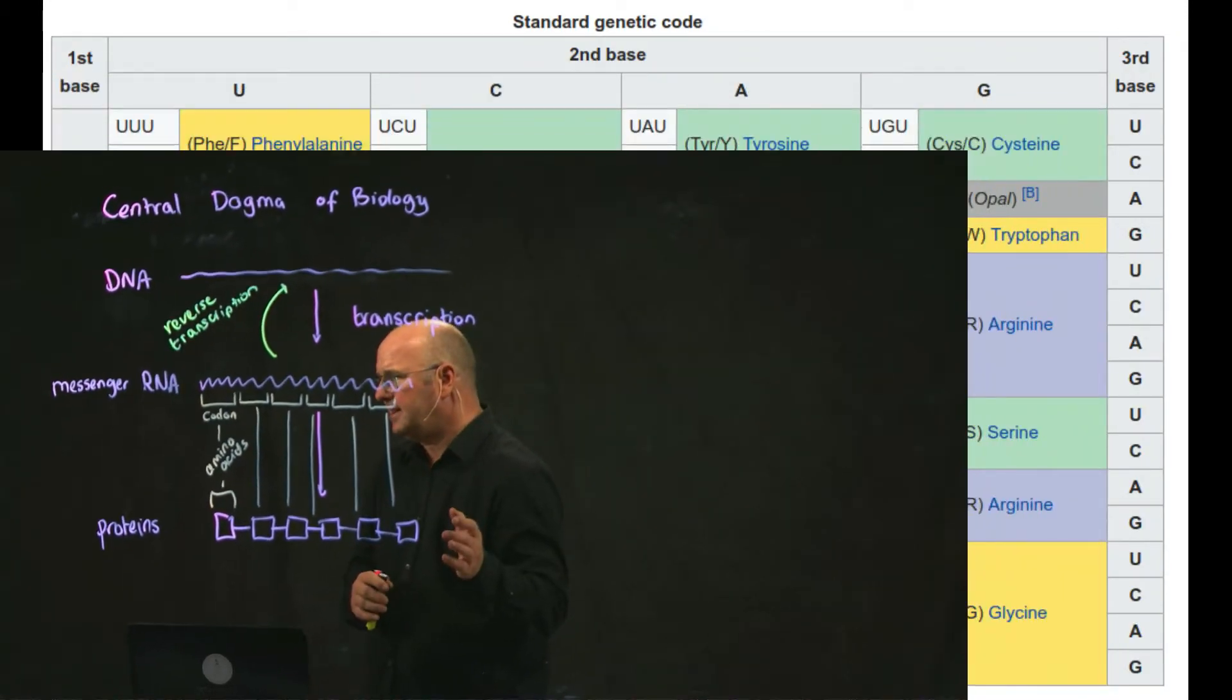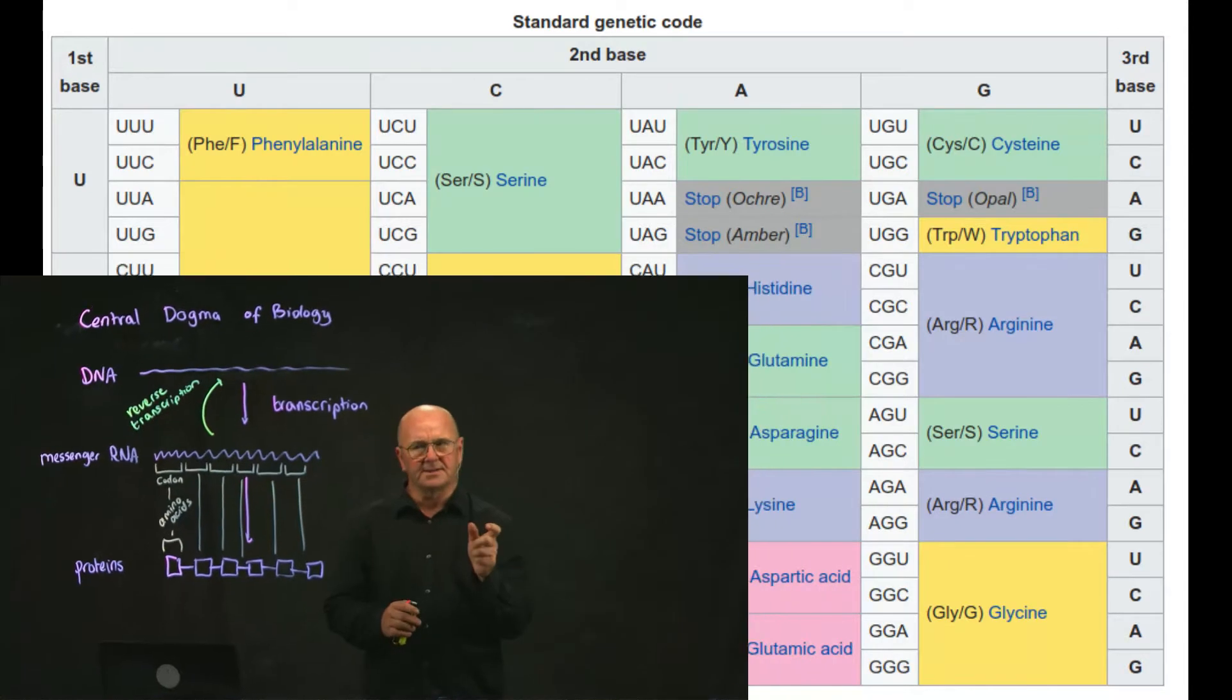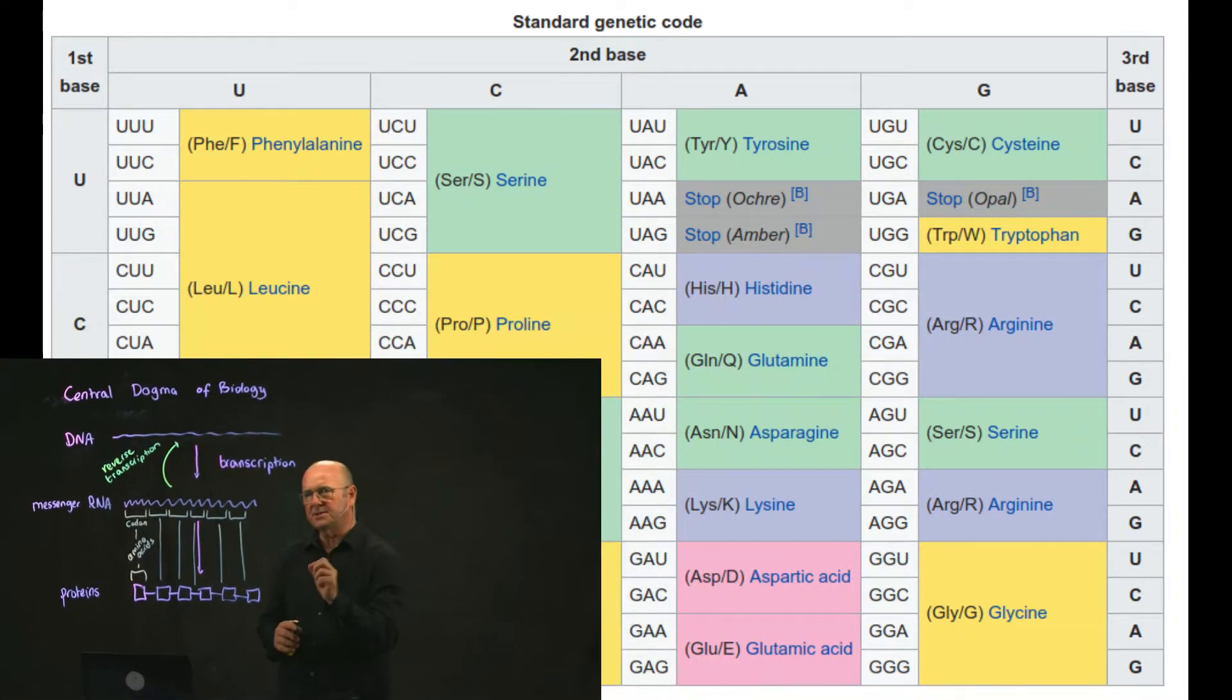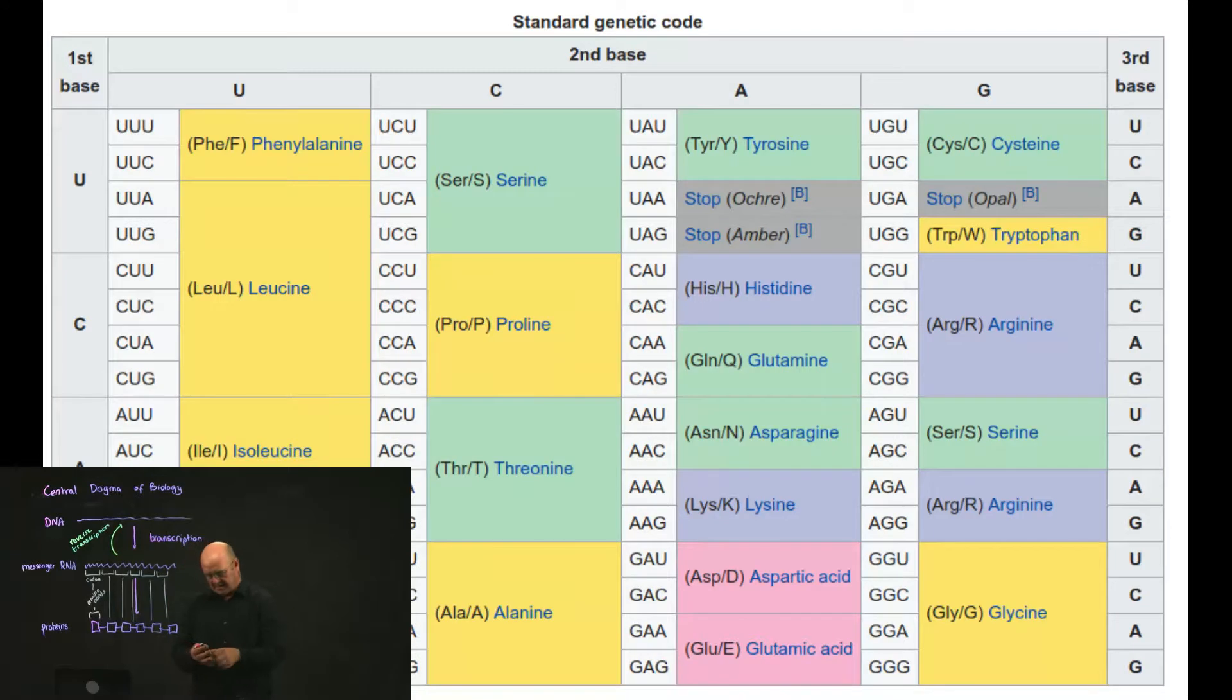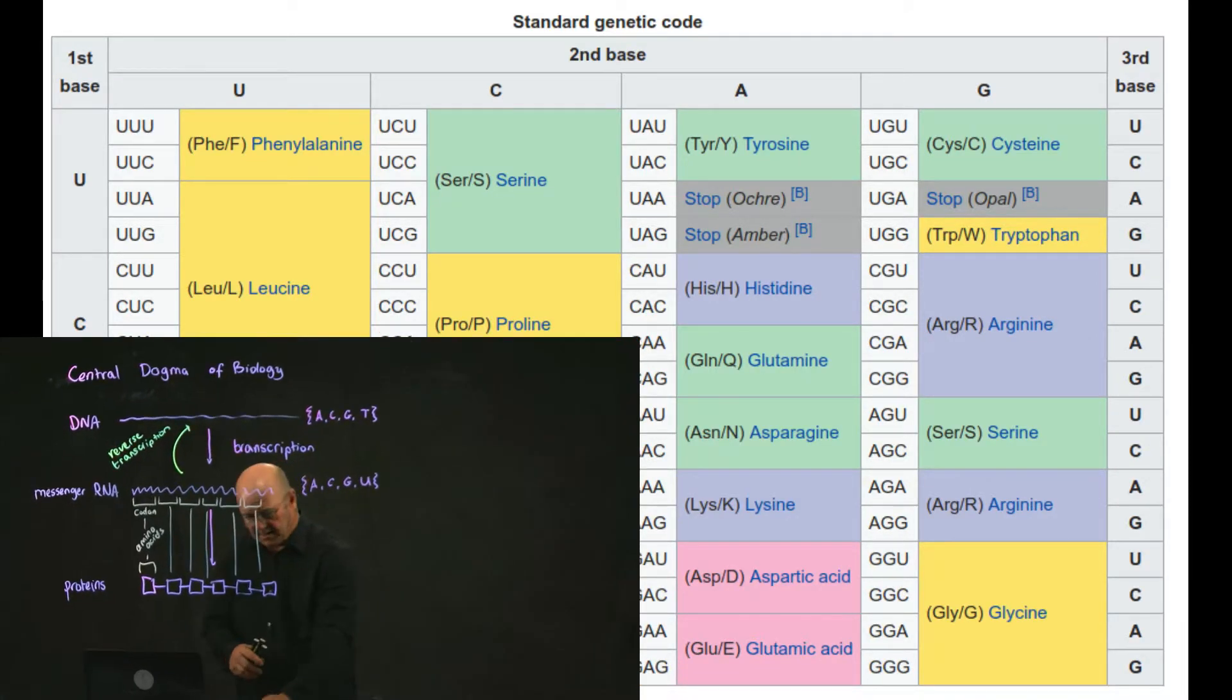As shown in this table here, you can take three letters. And what's shown in the table are RNA letters. And recall that DNA has an alphabet of A, C, G, and T. RNA is very similar. Its alphabet is A, C, G, and it uses U instead of T. And so in this table where it says, for example, U, U, U in the top left entry, the DNA equivalent of that would be T, T, T.